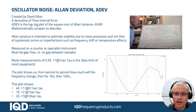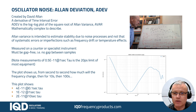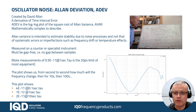The point about Allan Deviation is it's a very clever way of removing all the instabilities of an oscillator that are caused by systematic errors such as frequency drift, temperature, and ageing.